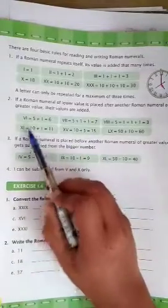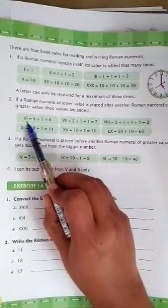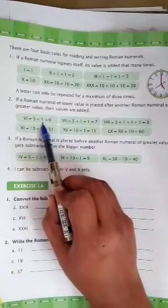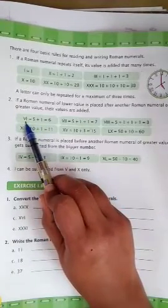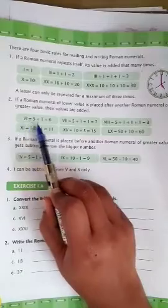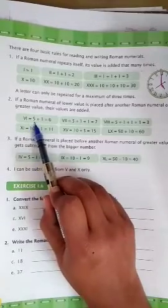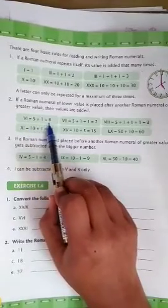As you know, V is used for 5 and I is used for 1. So, greater value, greater Roman numeral V, we add 5 plus 1 that is equal to 6.